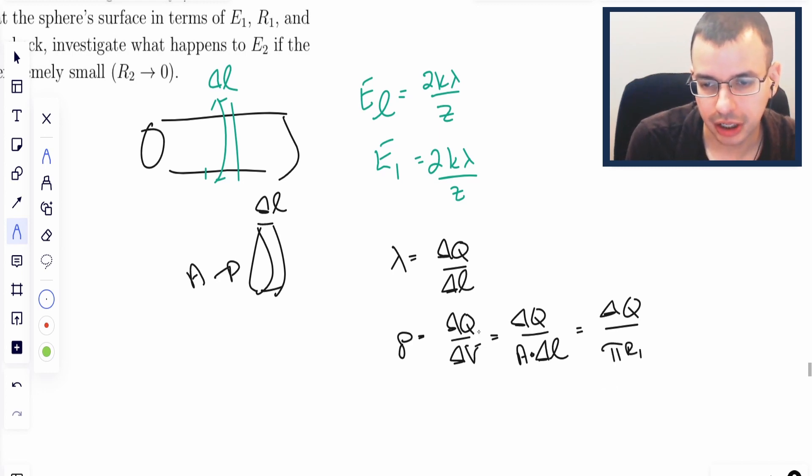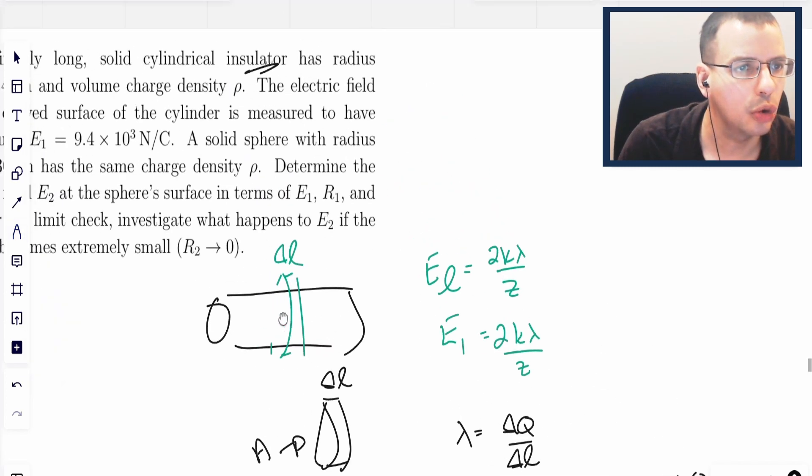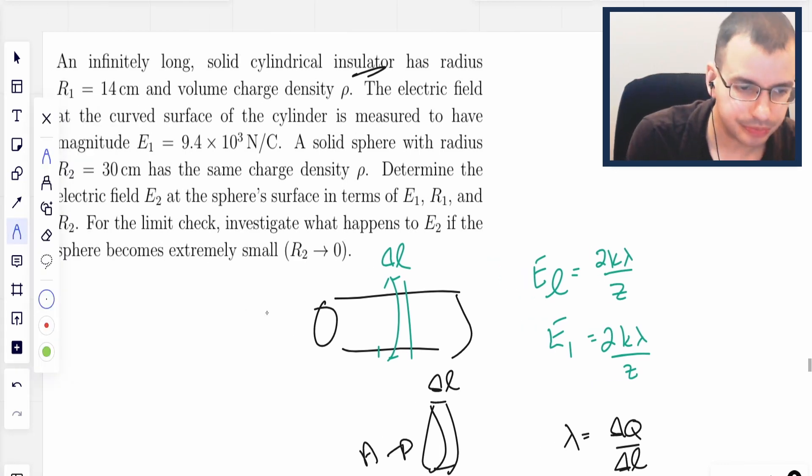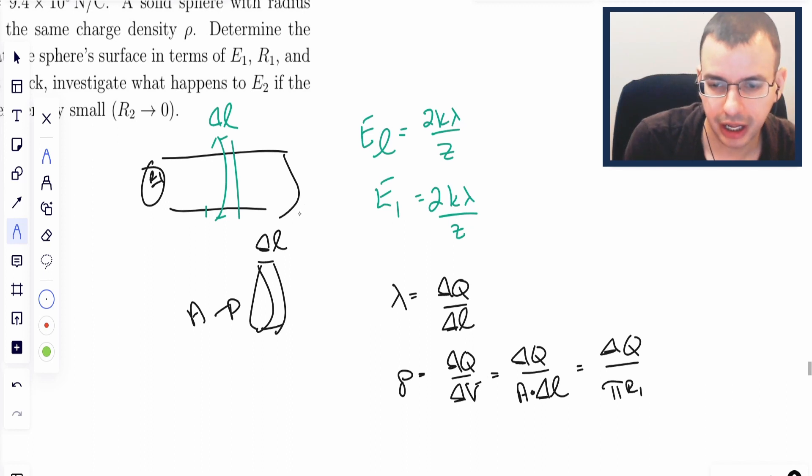Pi R, and it's going to be R1. This is R1. Pi R1 squared times delta L.